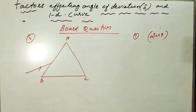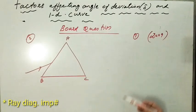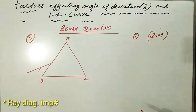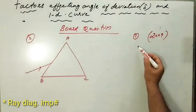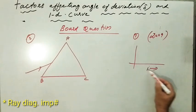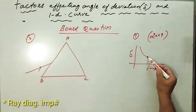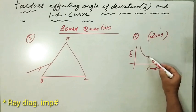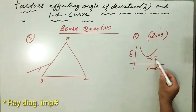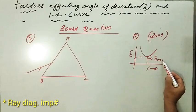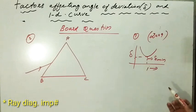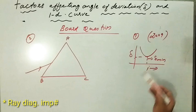Now let's discuss board questions related to today's topic. The first question, asked in 2009: how does the value of angle of deviation produced by a prism change with increase in the value of angle of incidence? From the ID curve, as the angle of incidence increases, the angle of deviation decreases until a particular value — delta minimum — and beyond that, if you increase the angle of incidence, the angle of deviation increases.